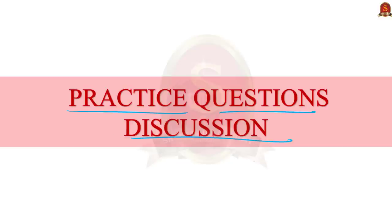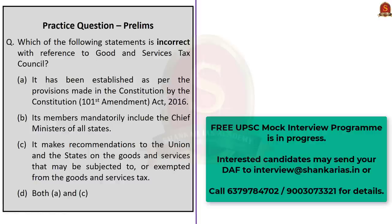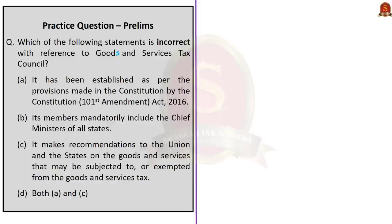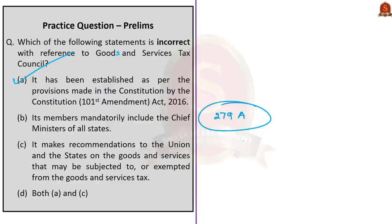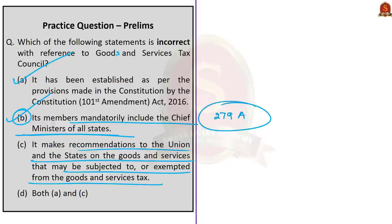Now for practice questions. Question on GST Council: Which of the following statements is incorrect? Statement A — it was established by the Constitution 101st Amendment Act 2016, which inserted Article 279A — is correct. Statement B — its members mandatorily include the chief ministers of all states — is incorrect, because members include Union State Minister of Revenue or Finance and ministers in charge of finance or taxation of all states, or any other minister nominated by each state government; chief ministers are not mandatory. The correct answer is option B.